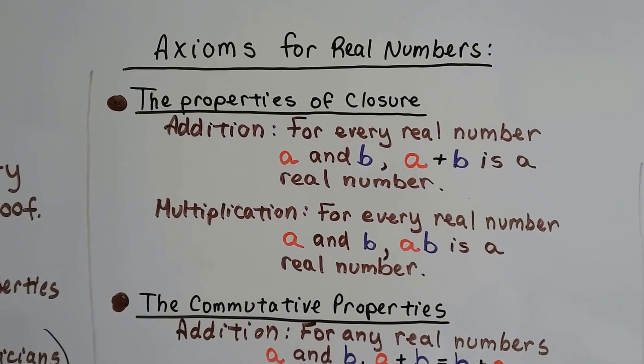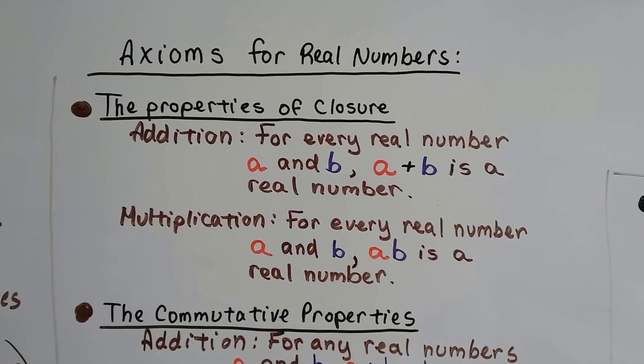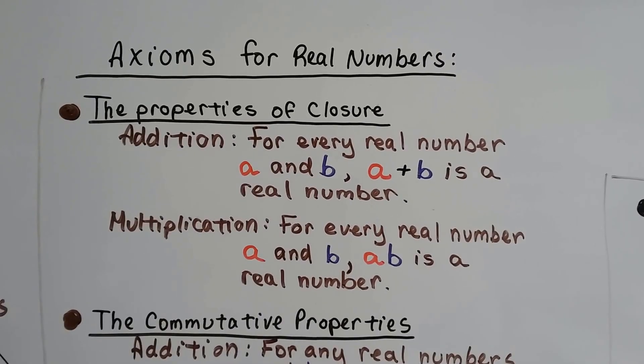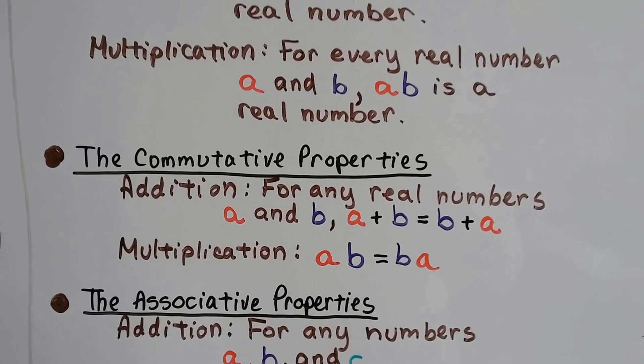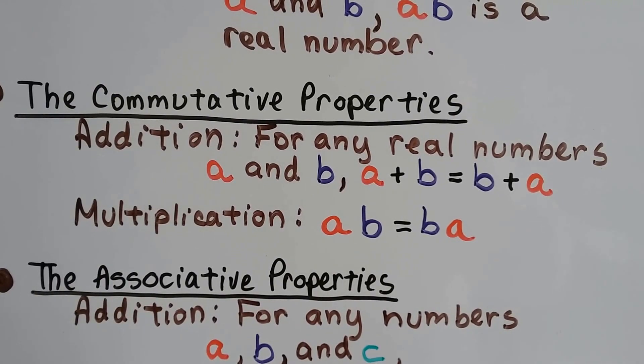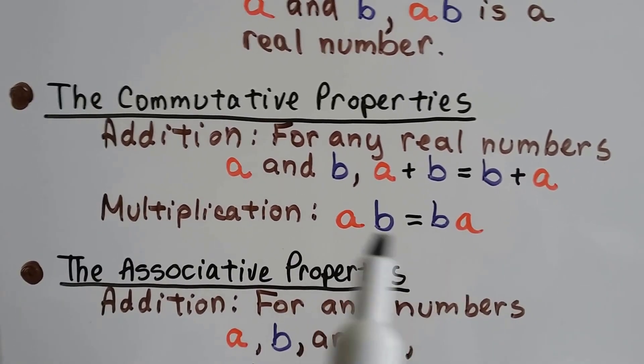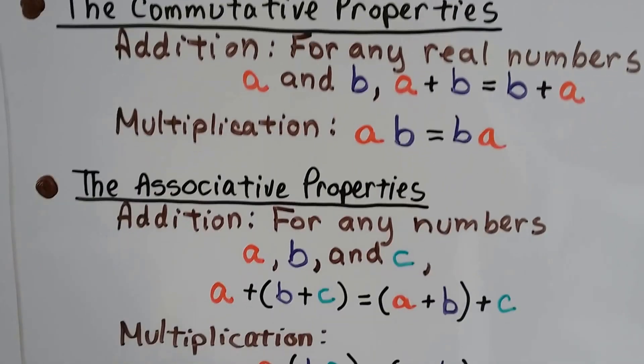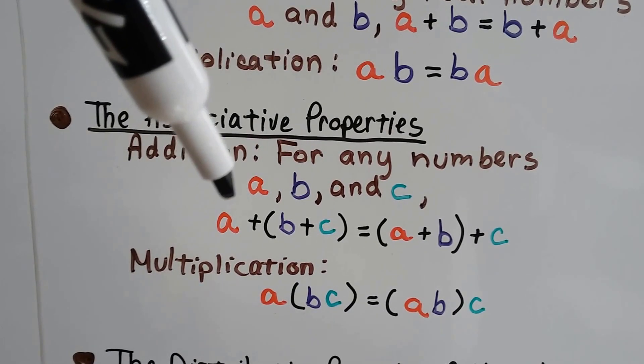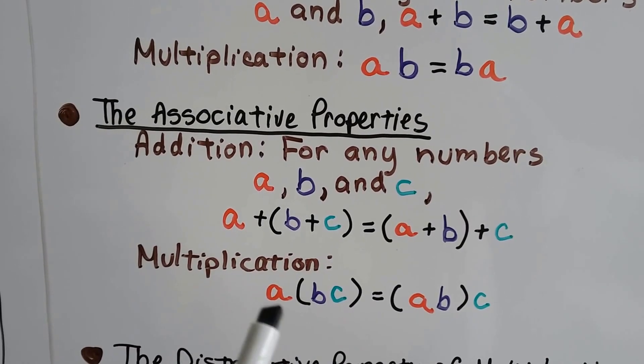Axioms for real numbers. We've got the properties of closure, that's for addition, that every real number A and B, A plus B, is a real number. And the property of closure for multiplication is for every real number A and B, A times B is a real number. And the commutative property says, for addition, that any real numbers A and B, A plus B is going to equal B plus A, and that it doesn't matter which order we add them. And for multiplication, it doesn't matter which order we multiply them, A times B is going to equal B times A. And the associative property says that we can regroup them. We can add B and C and then add A, or we can add A and B and then add C. And for multiplication, we can multiply B and C and then multiply A, or we can multiply A and B and then multiply C, and they'll equal each other.